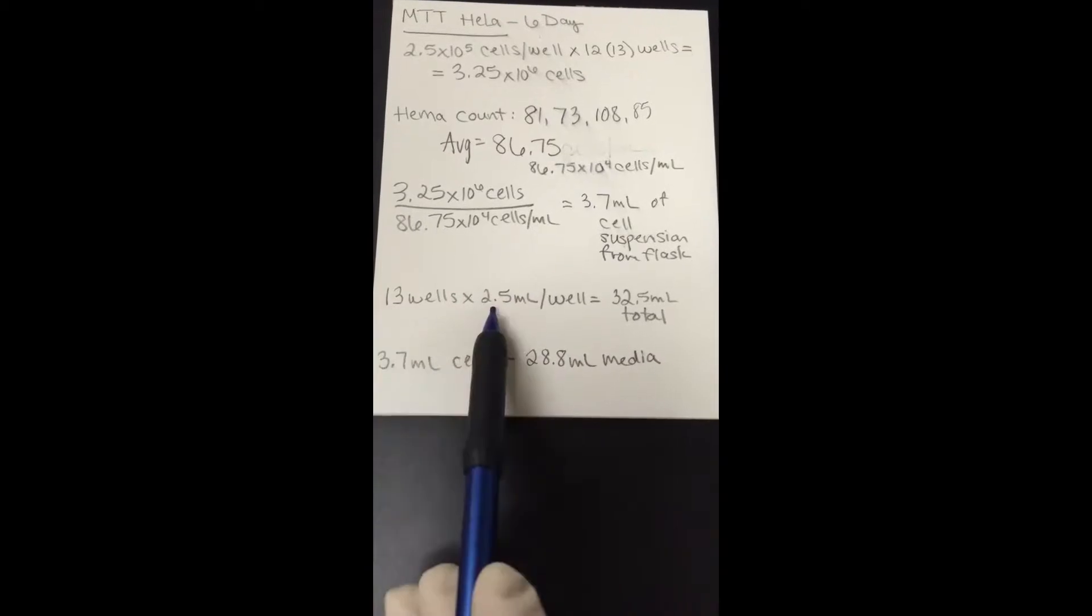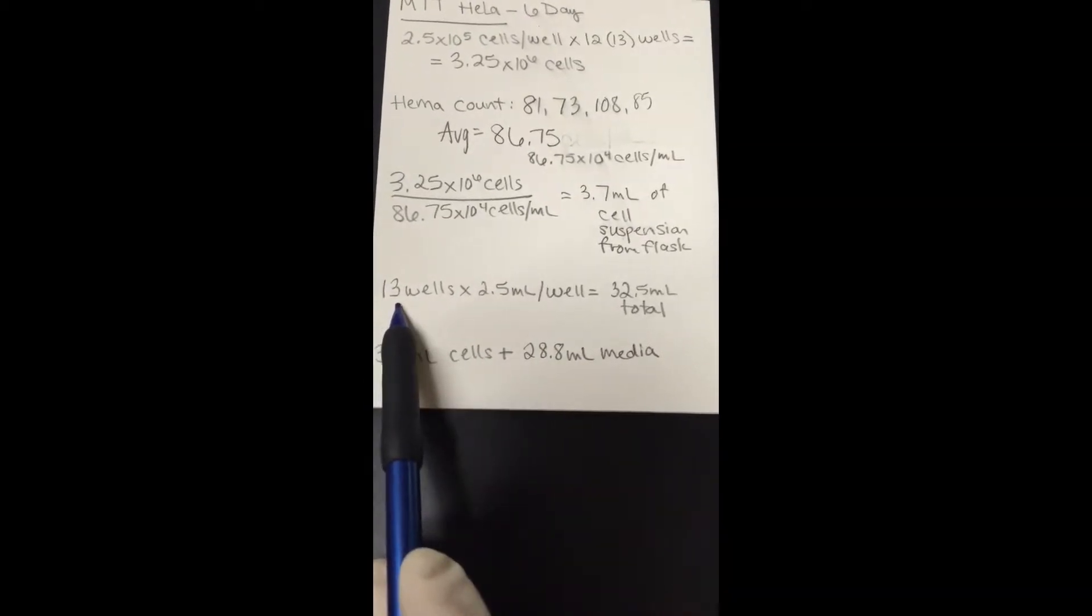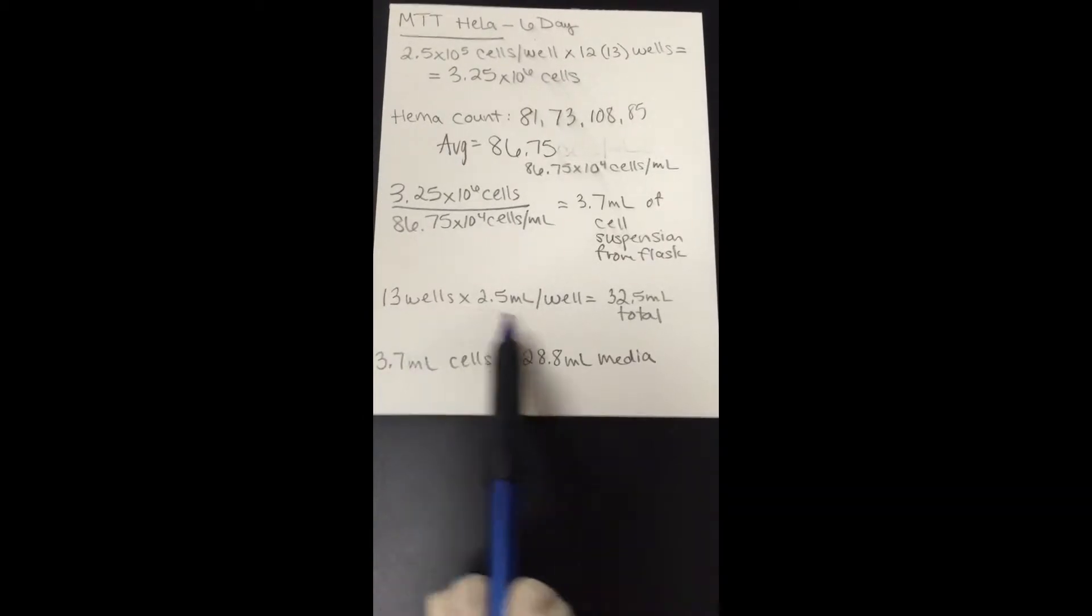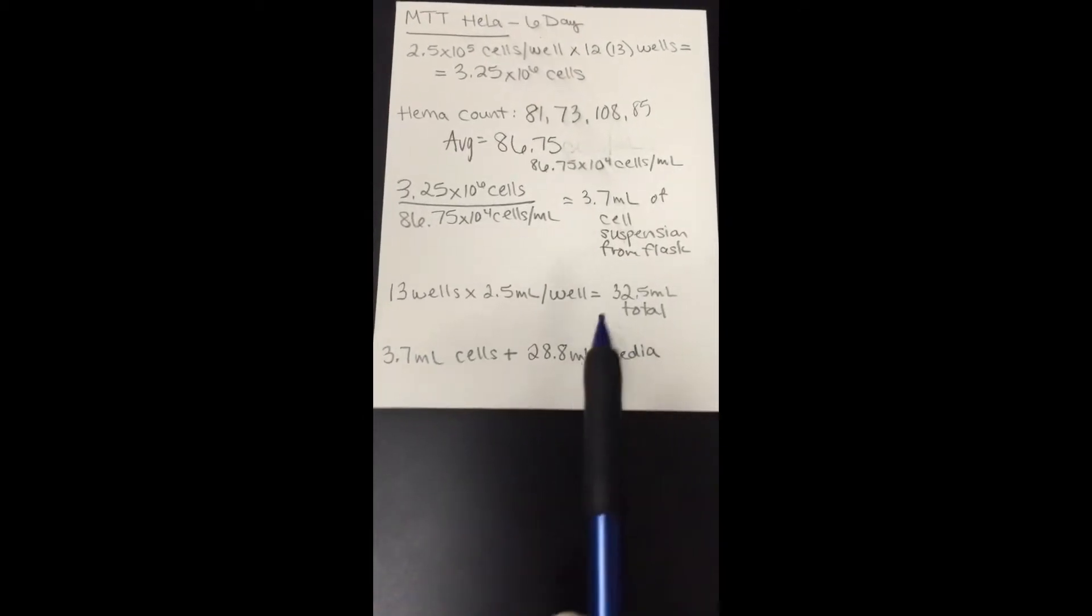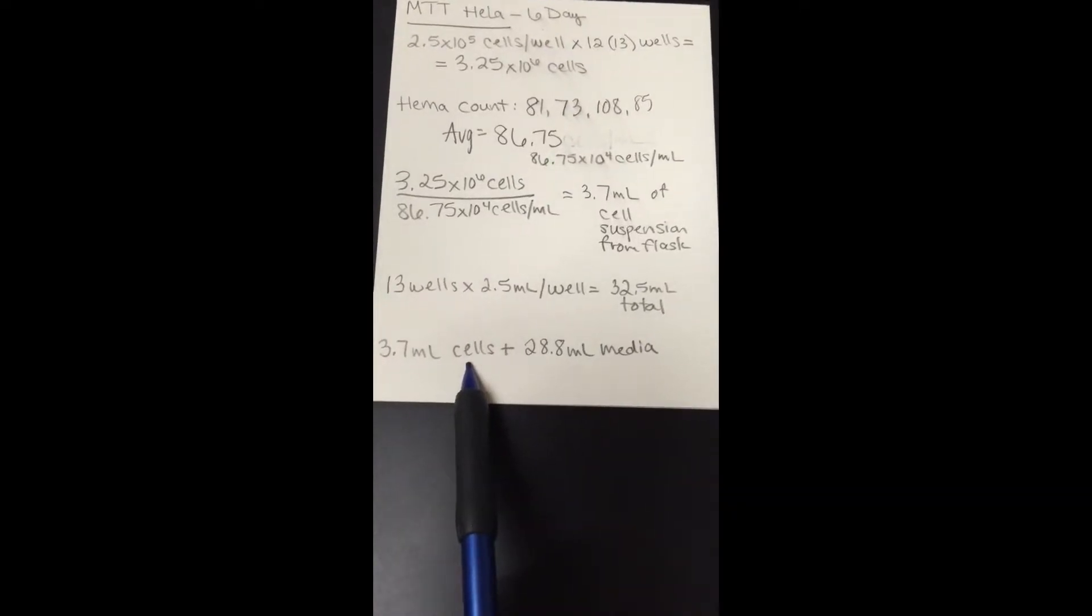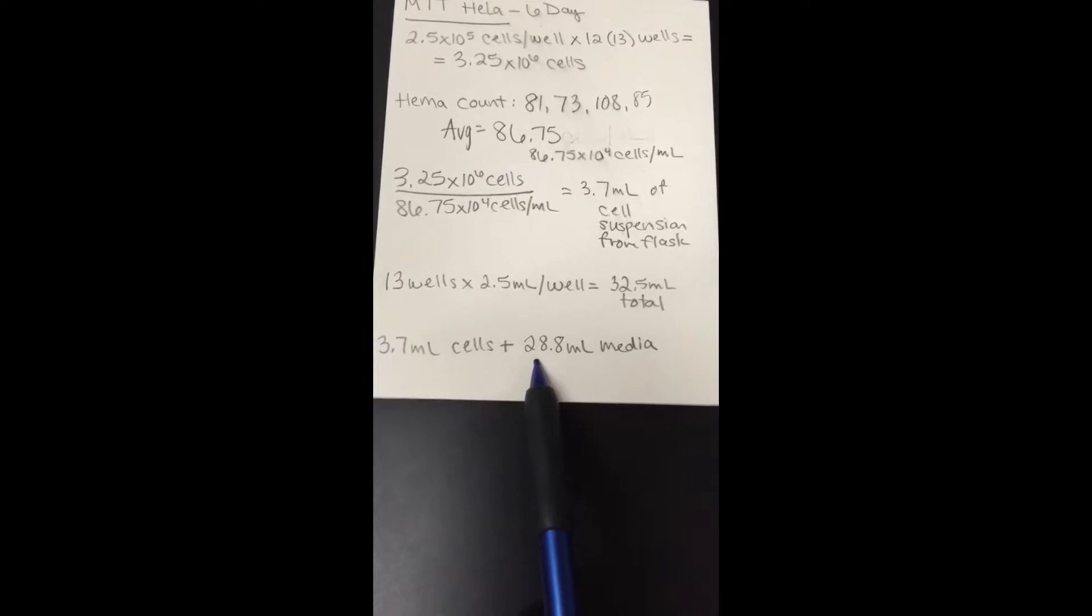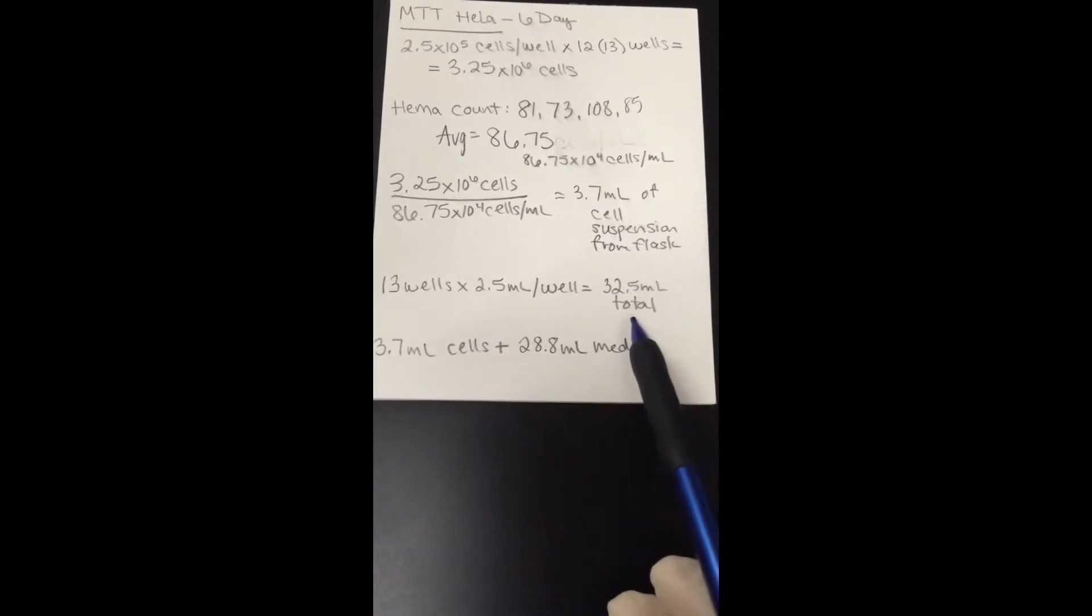And we need 2.5 milliliters per each well. And remember, we're calculating for 13, so we have extra. That gives me a total of 32.5 milliliters. So if I have 3.7 milliliters of the cells, that means I need to add 28.8 milliliters of media in order to get my total volume.